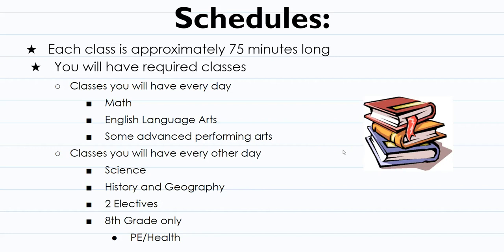Each one of your classes is approximately 75 minutes long — that is one hour and 15 minutes. You will have your required classes every day, which include math, English language arts, and some advanced performing arts classes. Classes you will have every other day will be science, history and geography, two electives, and if you are in eighth grade only, PE and health.